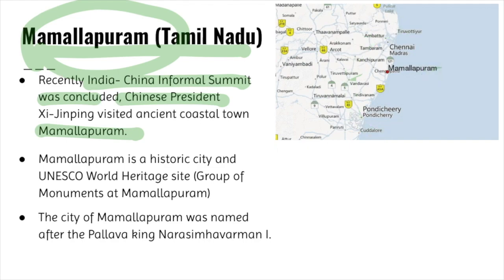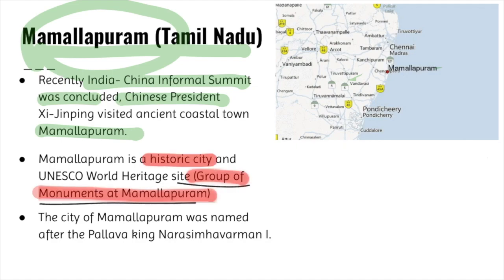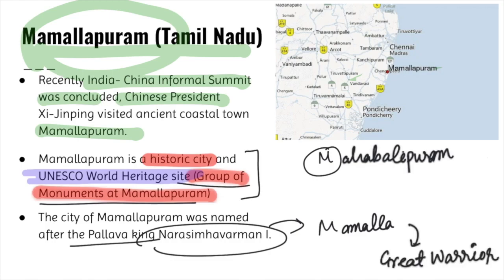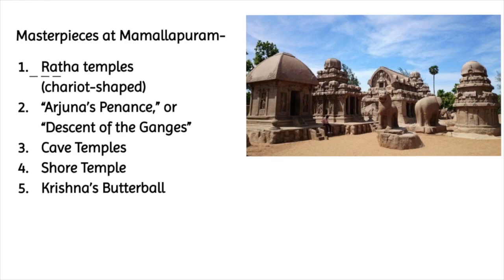Mahabalipuram is a historic city and the group of monuments at Mahabalipuram is also a UNESCO World Heritage Site. Earlier it was known as Mahabalipuram, but after the Pallava king Narasimha Varman — who was known as Mamalla, meaning a great warrior — it was renamed Mamallapuram.